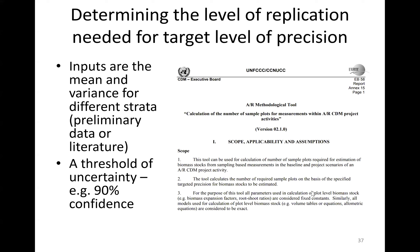Determining levels of replication needed to get your targeted level of precision is clearly articulated in most methods. A tool from the CDM, reused across many methods, takes as inputs the mean and variance for the parameter of interest — for example, above-ground biomass for a particular stratum like tall mangrove — and given a threshold of uncertainty (for example, needing to be within the 90% confidence interval of the mean), you can calculate exactly what your replication needs to be. It sounds really difficult but it's not — you just work your way through the instructions, and there are plenty of instructions.